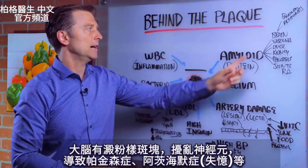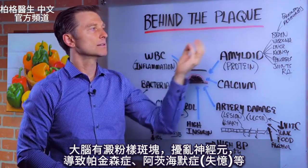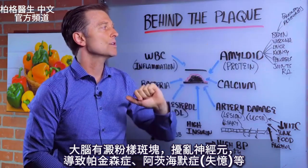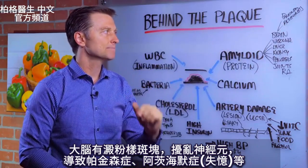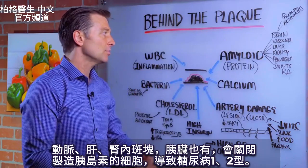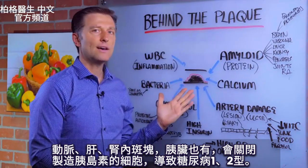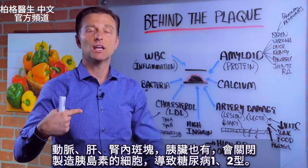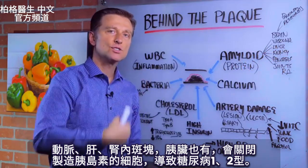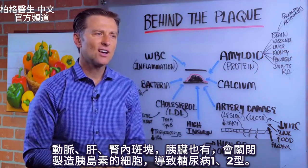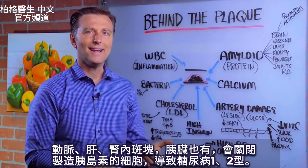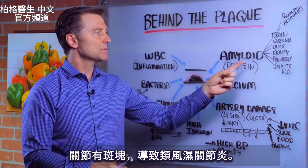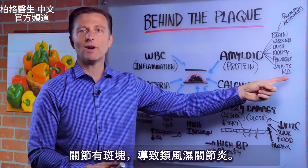Amyloid plaquing is one of the things that messes up your neurons in the brain — Parkinson's, Alzheimer's — so you have plaquing in the brain. And then you also have plaquing in the arteries. You can have amyloid plaquing in the liver and the kidney, and even in the pancreas, which can actually shut down the cells that make insulin and cause diabetes type 1, or even type 2 as well. You can have this plaquing in the joints — that's rheumatoid arthritis.